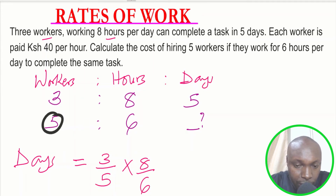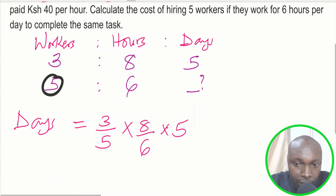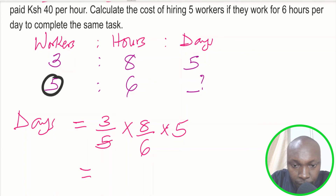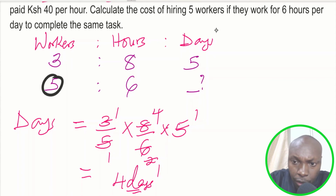To get the number of days taken by the five workers, we multiply: three over five, times eight over six, times five. Simplifying — five divides with five, three divided by three is one, six divided by three is two, two divided by two is one, eight divided by two is four. This gives exactly four days. So five workers are going to take four days.